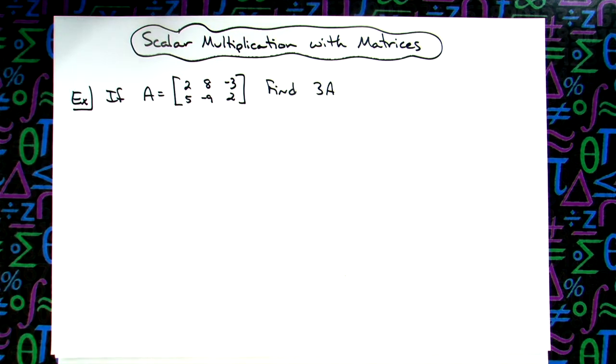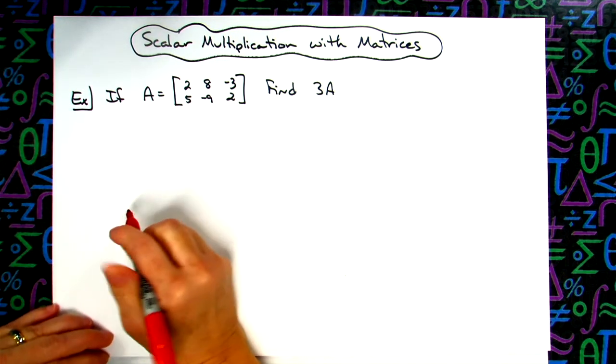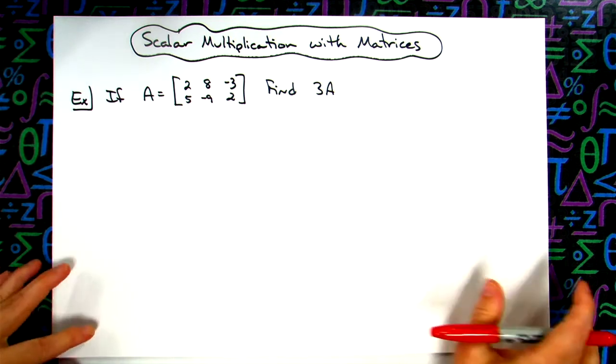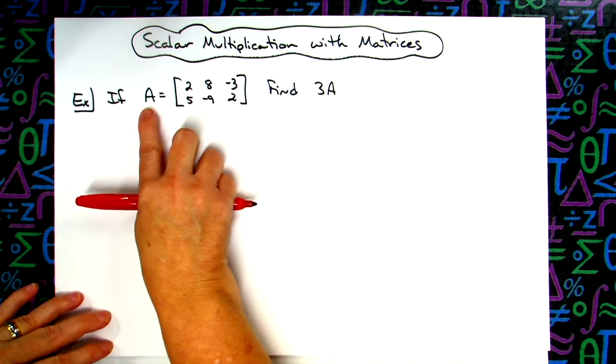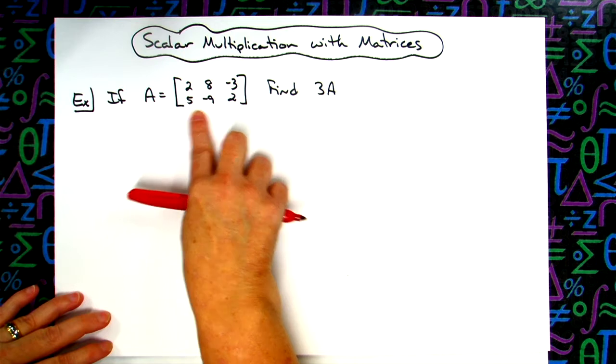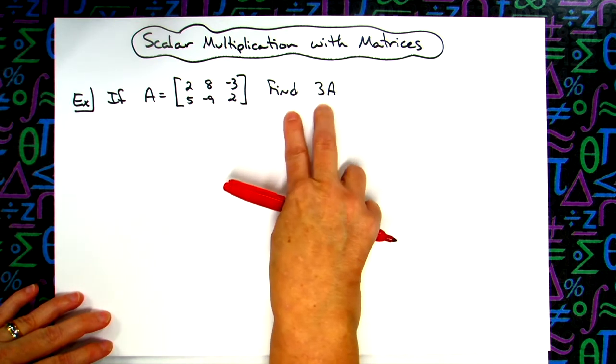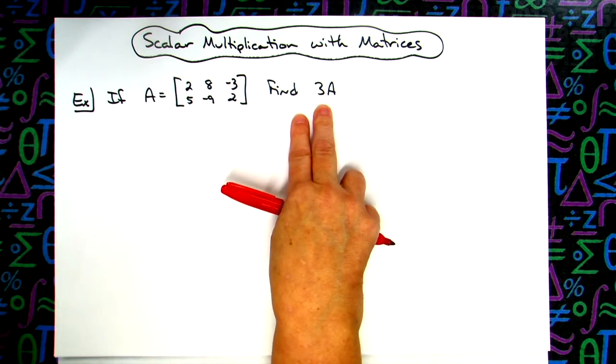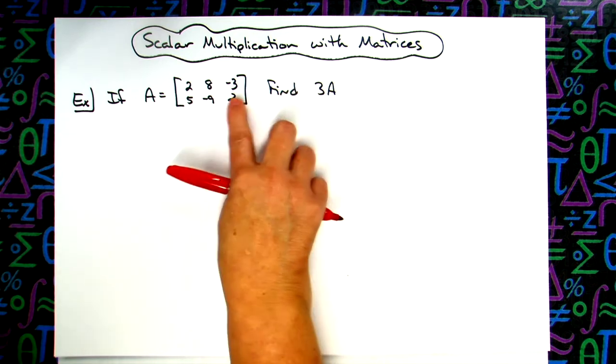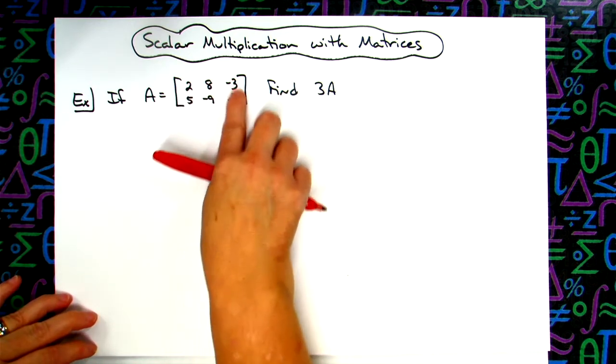In this video we're going to work out one example of some scalar multiplication being done with matrices here. All right, so if our A matrix is a 2 by 3 matrix right here and I'm trying to find 3A, it's as easy as taking 3 times every item inside that matrix.